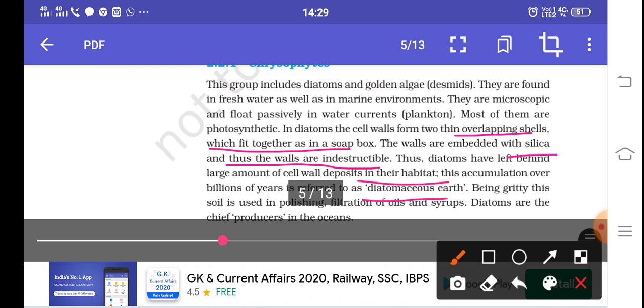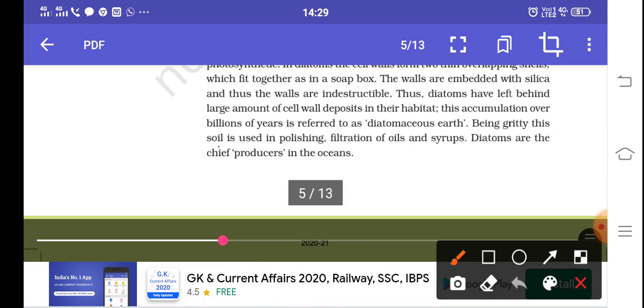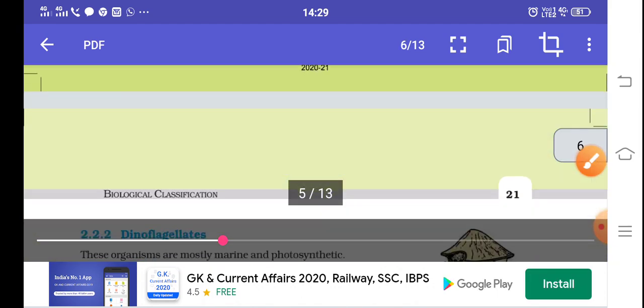The shells accumulate in the sea and form diatomaceous earth. Being gritty, this soil is used for polishing, filtration of oils and syrups. The accumulation releases oil from the soil, and this diatomaceous earth is used in various industrial applications. Diatoms are chief producers of the oceans because they are photosynthetic.